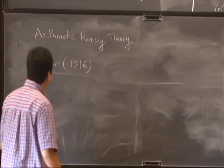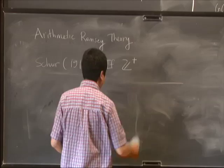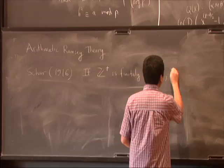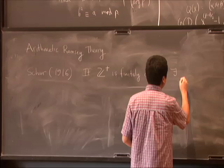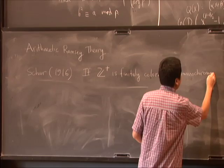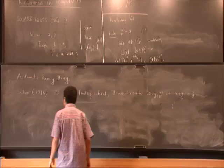In 1916 Schur proved that if the set of all positive integers is finitely colored, which is the same thing as finitely partitioned if you want, we can always find a monochromatic triple x, y, and z such that x plus y equals z.